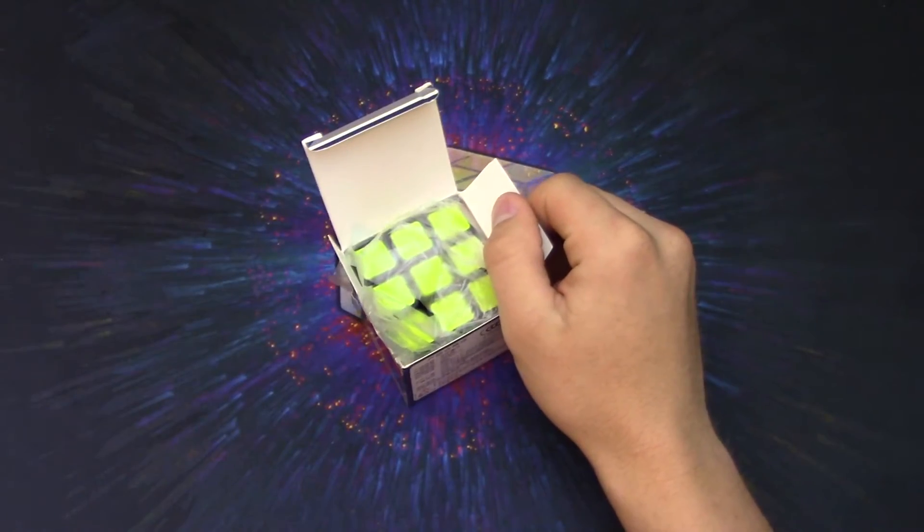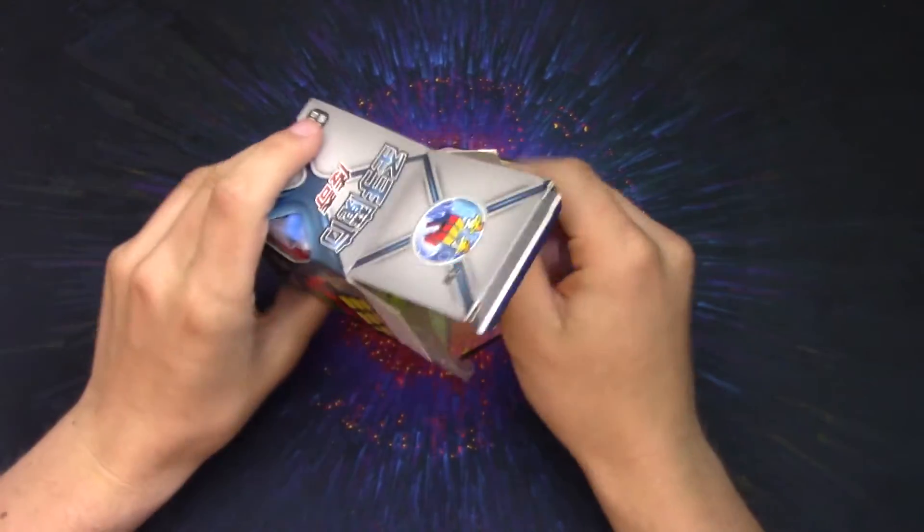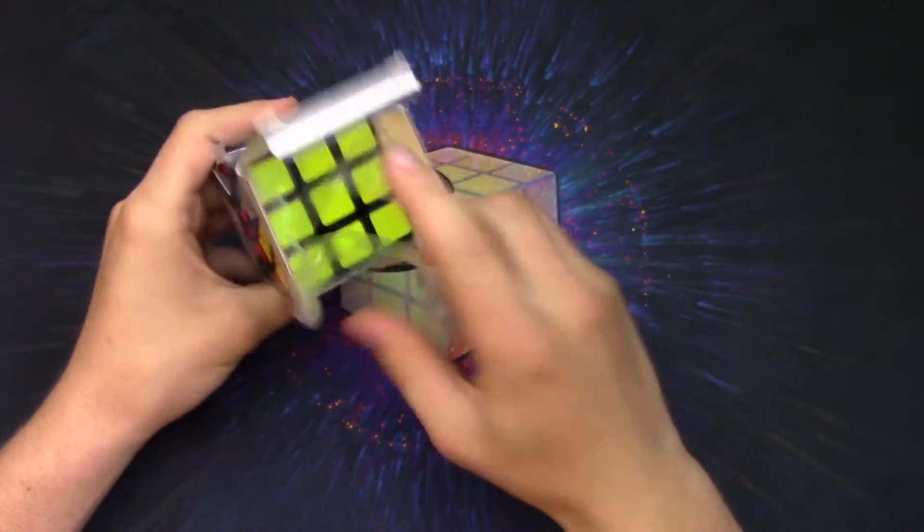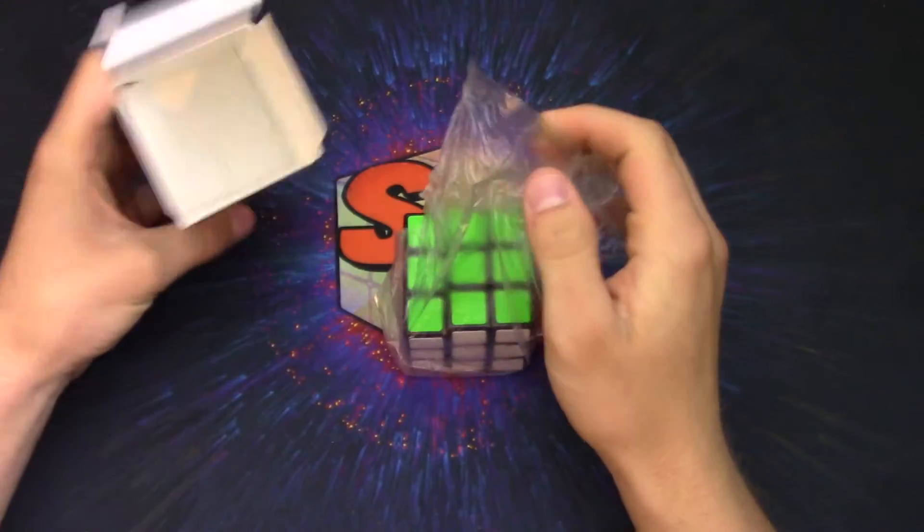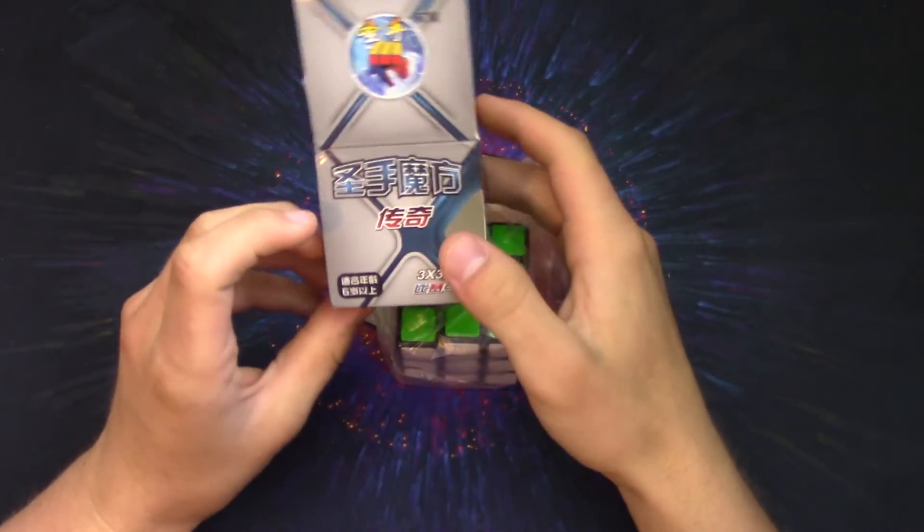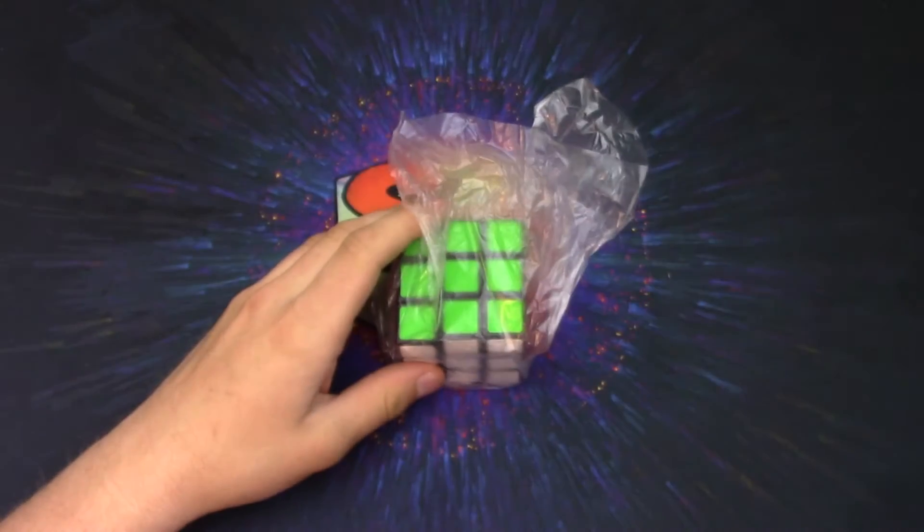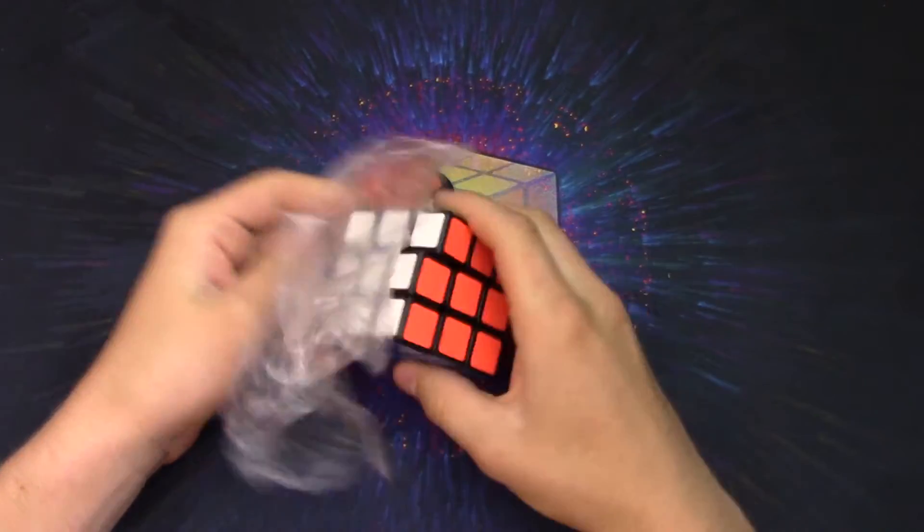So, came that thingy, go away, and it's in plastic wrap or something. Alright, but that's the box. Can't read anything on it. So, yep, there you go. Here's the cube.